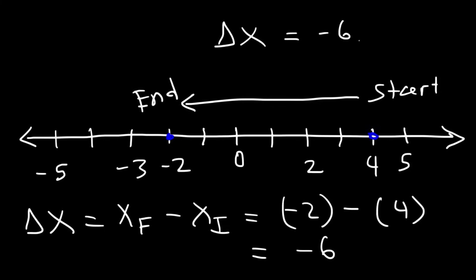What is the distance we traveled? Distance is always a positive value. We traveled 6 units to the left. Distance is a scalar quantity — it's always positive. But displacement can be positive or negative. Anytime you travel to the right, displacement is positive. If you travel to the left, displacement is negative. But distance is always positive regardless of direction.